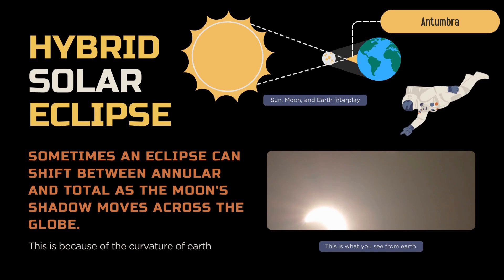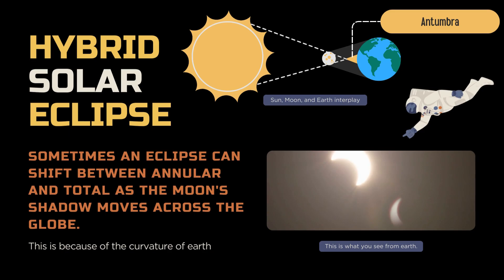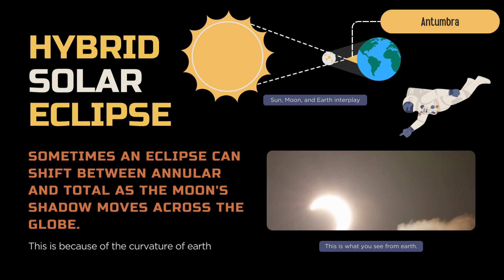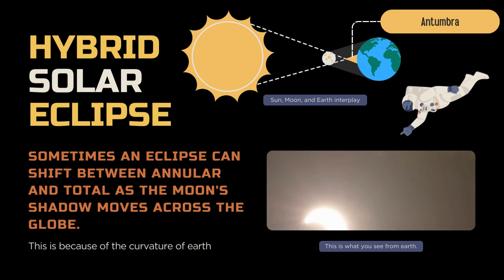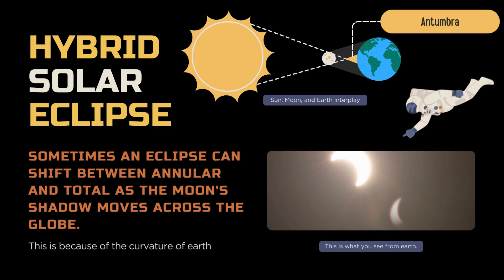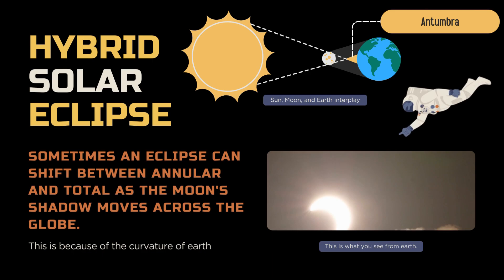The last one is the hybrid eclipse. It's a rare type of solar eclipse that transitions between a total eclipse and an annular eclipse along different sections of its path across earth. This phenomenon occurs because of the curvature of the earth and variation in the distance between the earth and the moon. Hybrid eclipses are less common than total, annular, or partial eclipses, and they occur approximately once every decade.